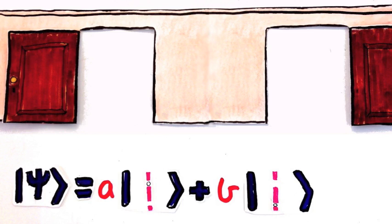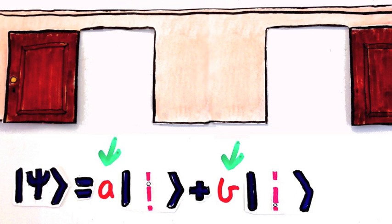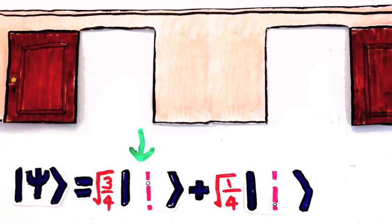This fact is reflected in the wavefunction through those coefficients that I've been ignoring. In this example, they could be these numbers. You interpret this as, the bigger the number, the more likely the corresponding state is to happen.